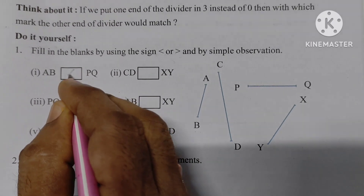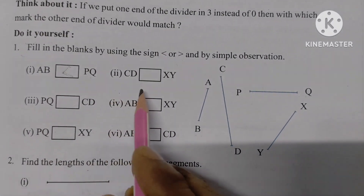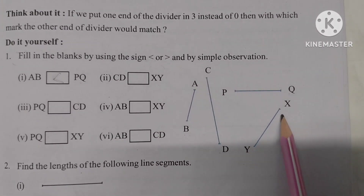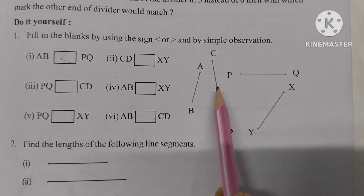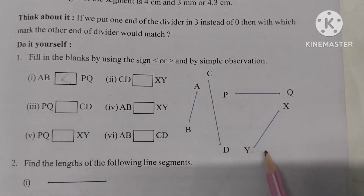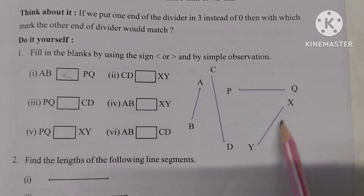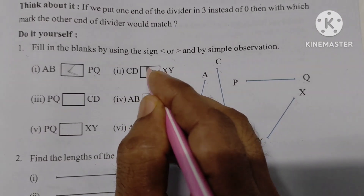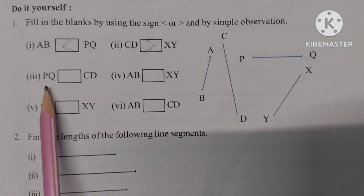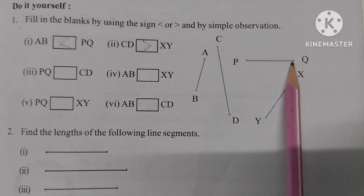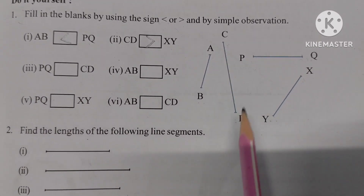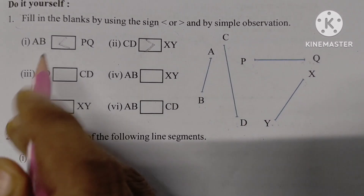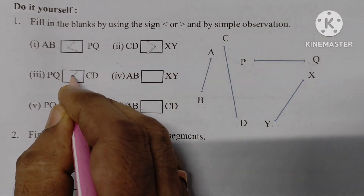Next, comparing CD and XY: by simple observation we find that CD is greater than XY. Then comparing CD and PQ: we find that CD is greater than PQ.